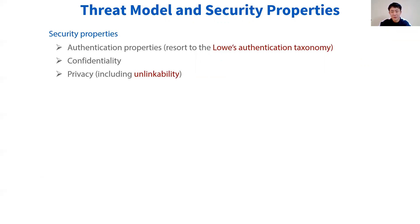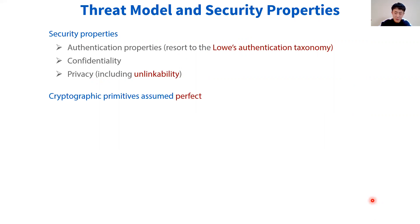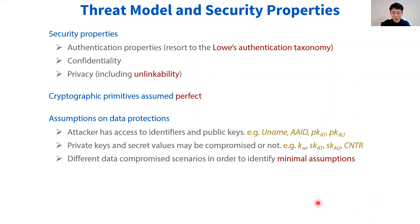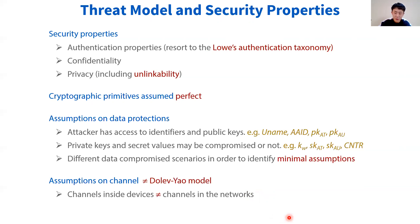To verify UAF, we consider its authentication, confidentiality, and privacy properties. We use the Lowe authentication taxonomy to describe the authentication properties. We assume the cryptographic algorithms are perfect. We assume some protocol data fields are public, while others can be compromised or not. Our tool verifies if the security goals of UAF hold when such fields are compromised, to identify minimal assumptions. Because most entities in the UAF protocol are on the user's device, they communicate using inter-process communication channels. Since such channels have different characteristics than public network channels, we model them differently than the Dolev-Yao model.